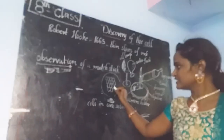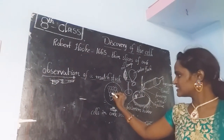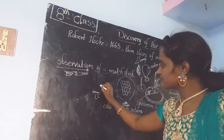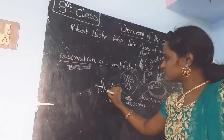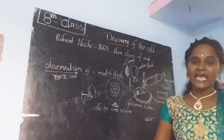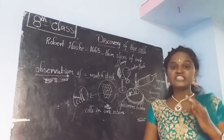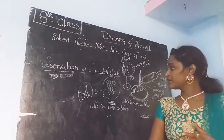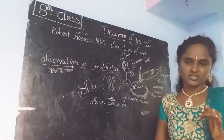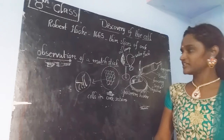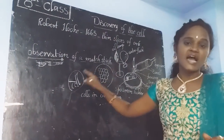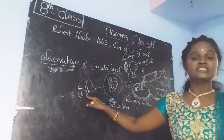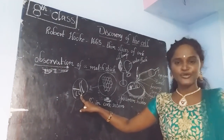And he just compared the structure of this cork with a honeycomb. Upon seeing these empty rooms, he gave them the name 'cell.' Robert Hooke gave the name 'cell.' Cell is a Latin word — in Latin, cell means 'little room.' He called that empty hexagonal box a 'little room,' that's why he used the Latin word 'cell.'